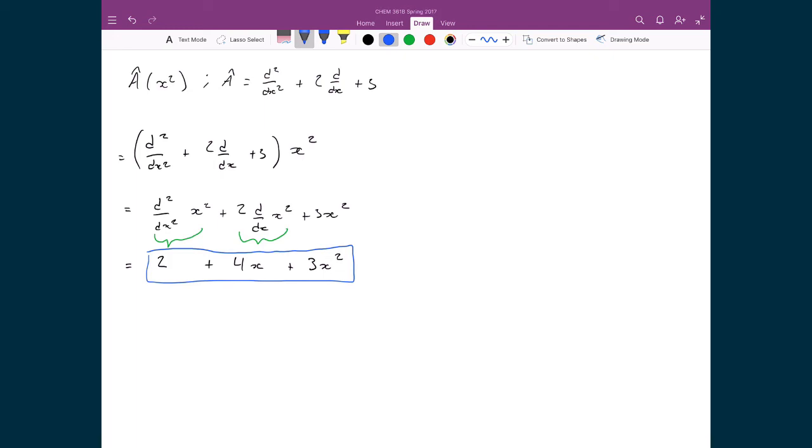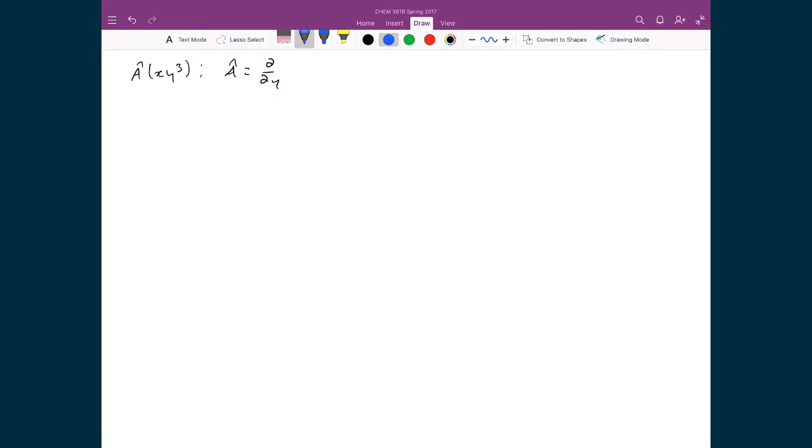So let's do one final example. This example now is I have a function x times y cubed and I'm applying some operator to it a hat which in this case is just the partial differential with respect to y. So in this case I'm going to explicitly write in that partial differential d by dy x y cubed. And since I'm taking a partial with respect to y, x can be held constant so I can move that out front. So what I'm left with is x times d by dy y cubed. And so when I evaluate this differential, then I'm going to get 3xy squared.